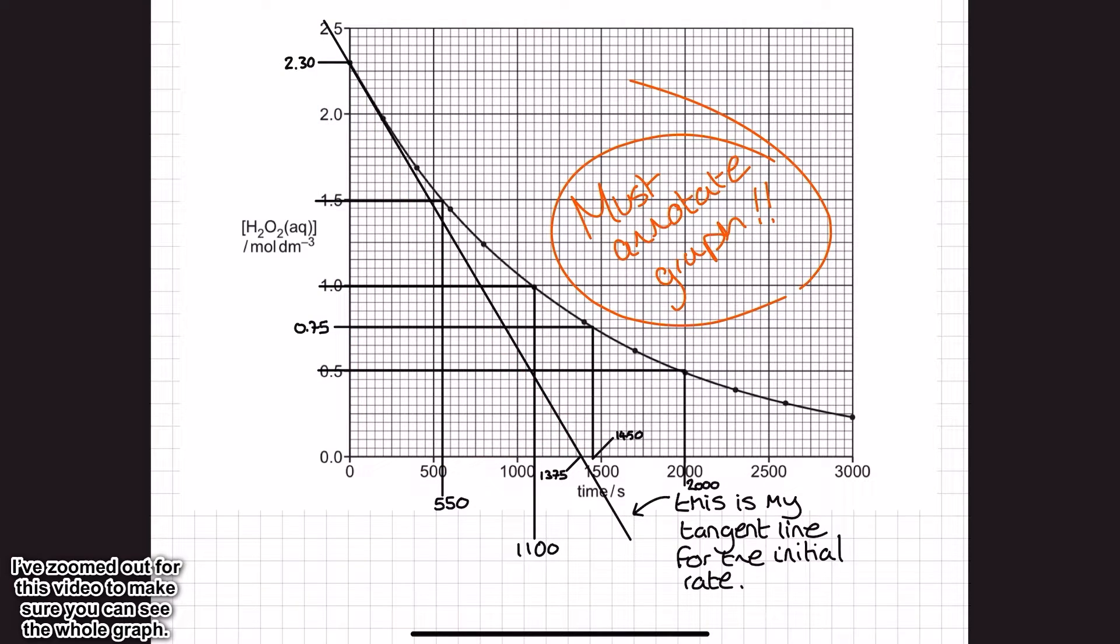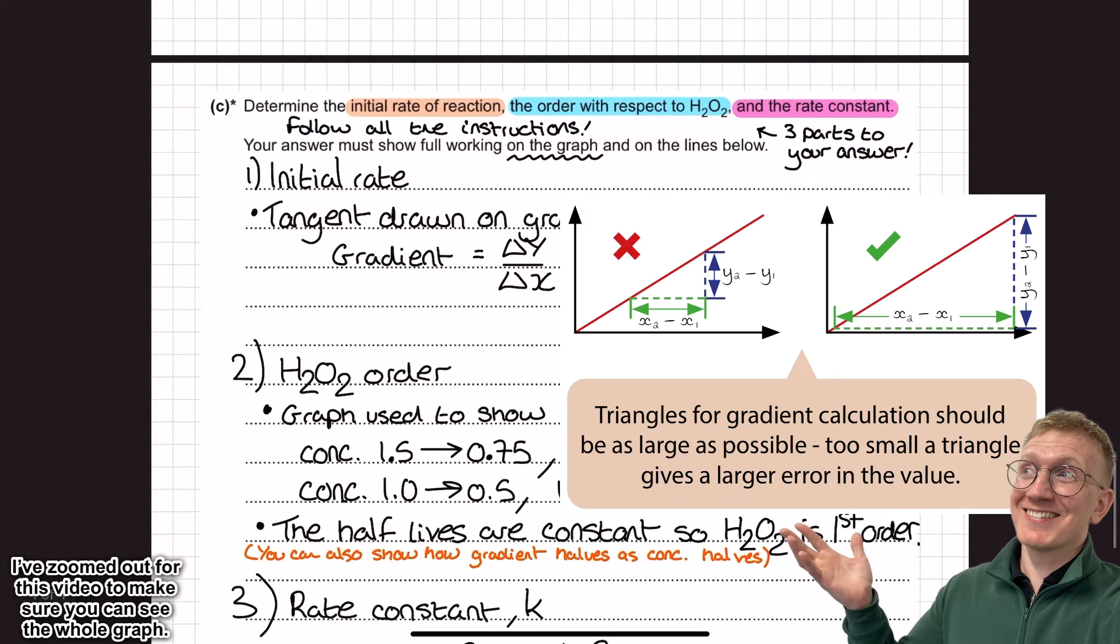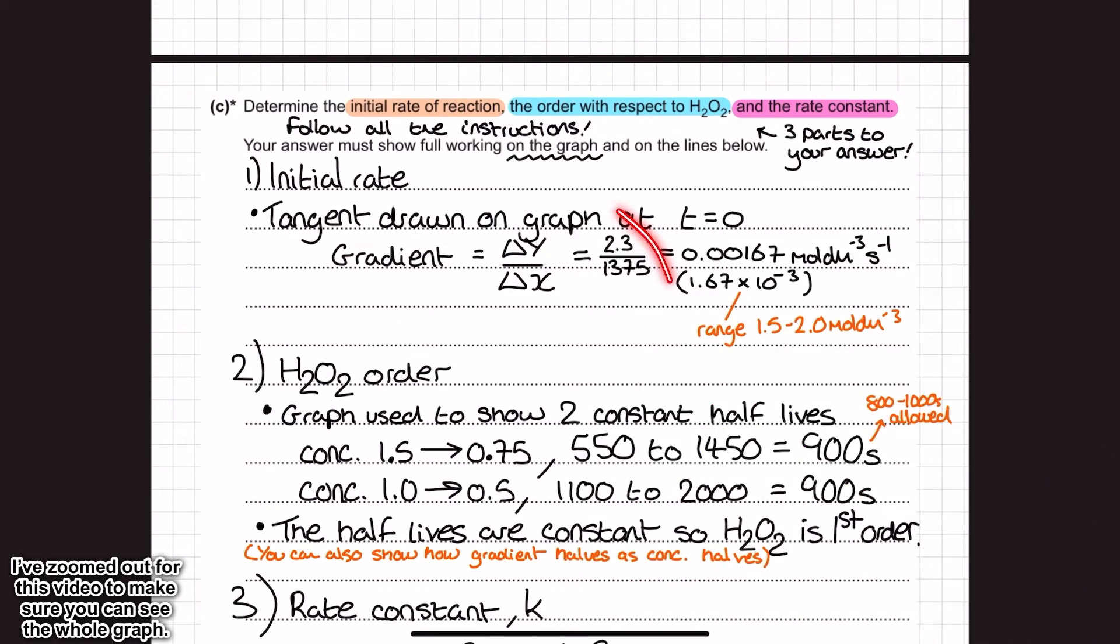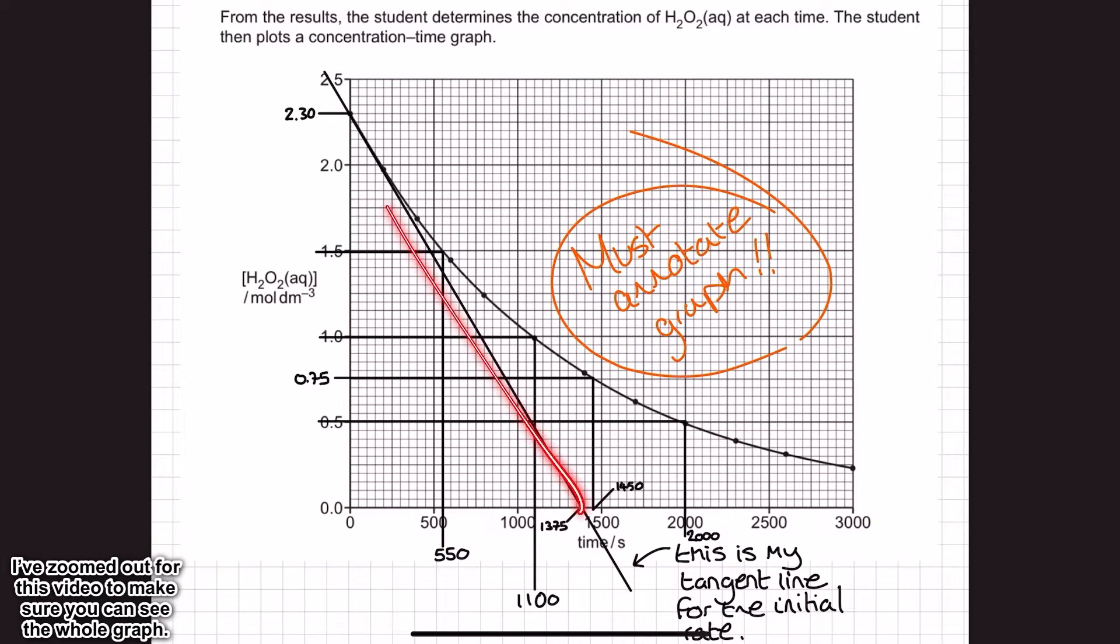When I do my calculation for this then, I've got my gradient calculation, and I've got my change in y divided by my change in x. Now, because I'm using this enormous whopper of a triangle just here, and I can see down here in the bottom left-hand corner, the origin is 0,0, I can use my entire side here for my change in y, which is how I've got the 2.3, that's on the next page.